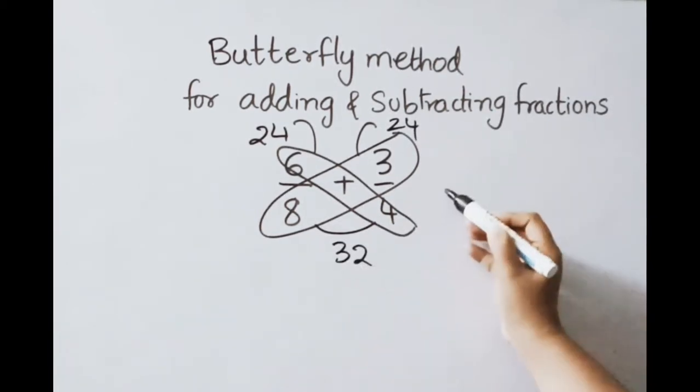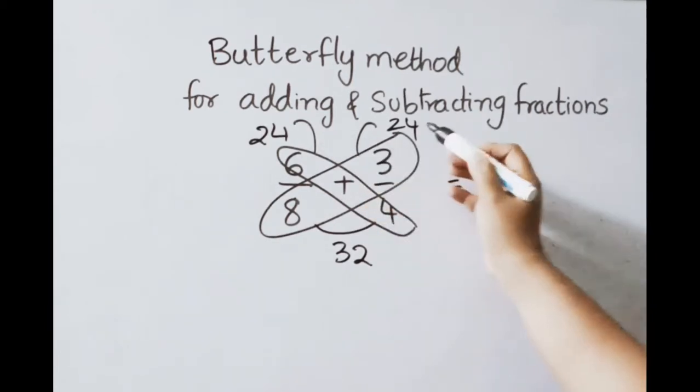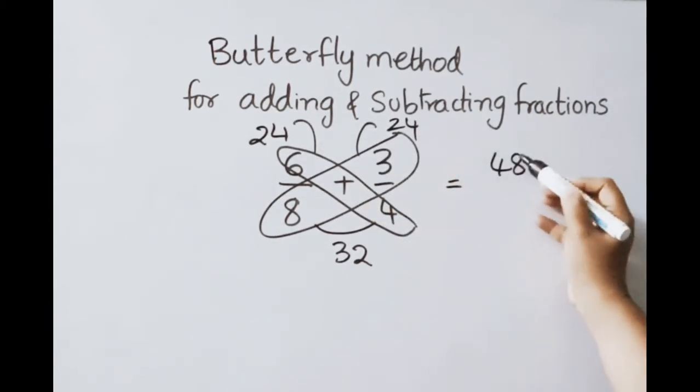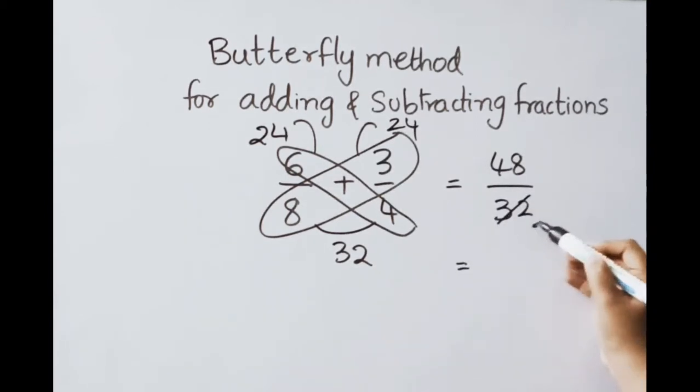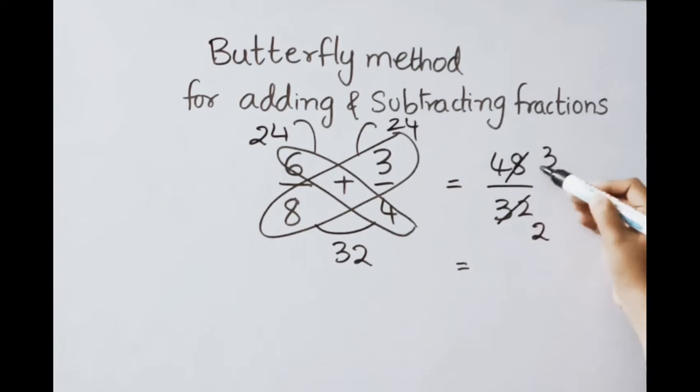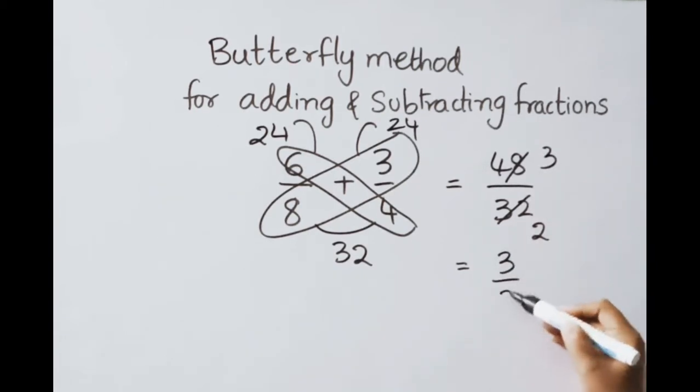Multiply these both. 8 4's are 32. Now write on 24 plus 24, 48 by 32. 16 table, 16 2's are 32, 16 3's are 48. So the answer is 3 by 2.